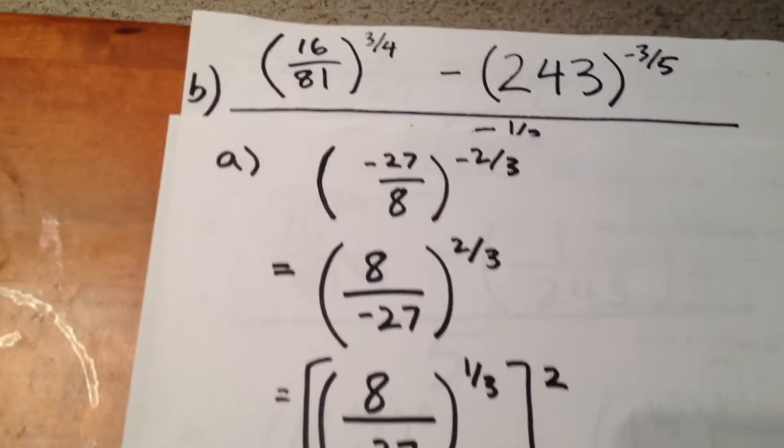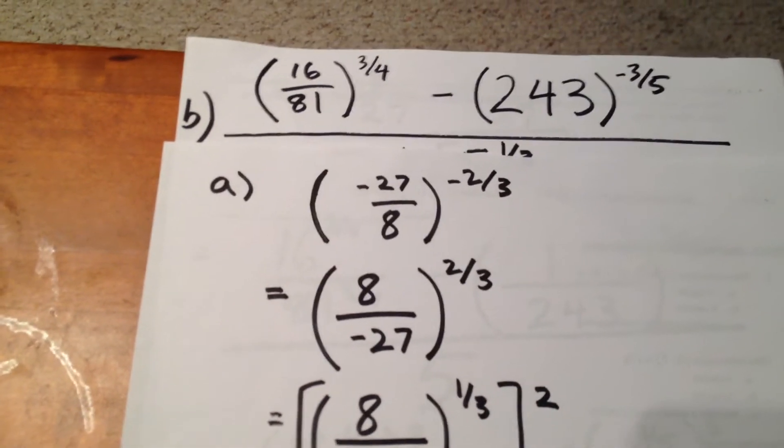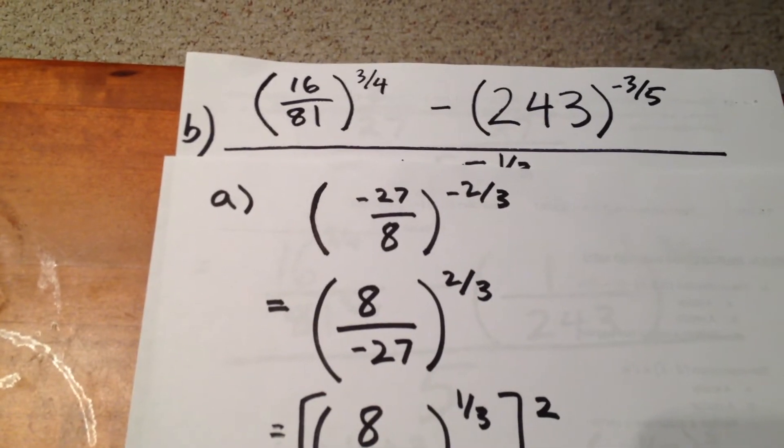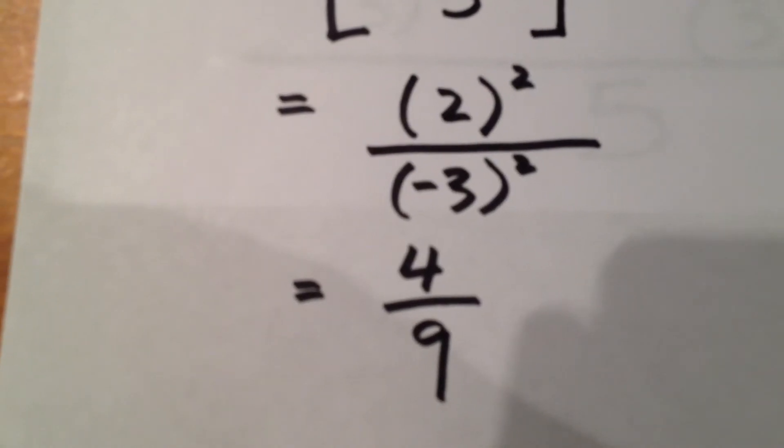So, the original expression of negative 27 over 8 quantity to the exponent negative two-thirds is equal to four-ninths.